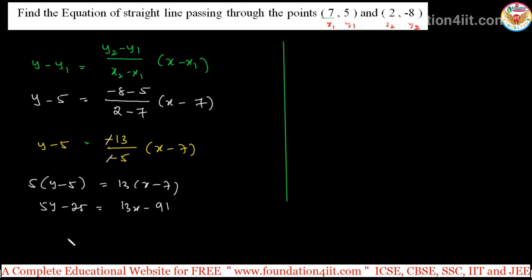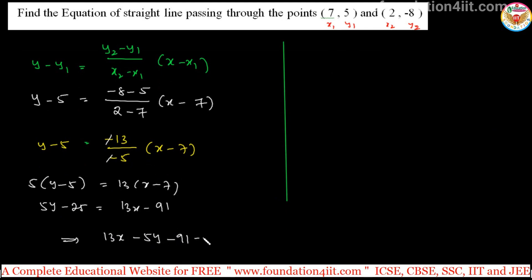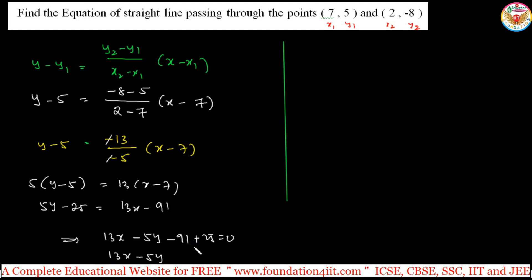Taking all terms to one side: 13x minus 5y minus 91 plus 25 equals 0, which gives 13x minus 5y minus 66 equals 0, or 13x minus 5y equals 66. This is the equation of the straight line. As you can see, using this formula is very lengthy.